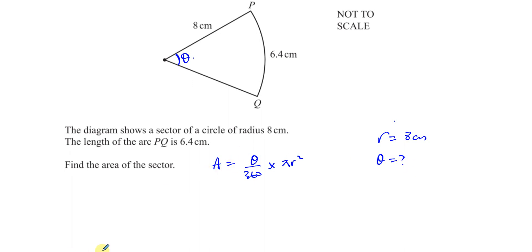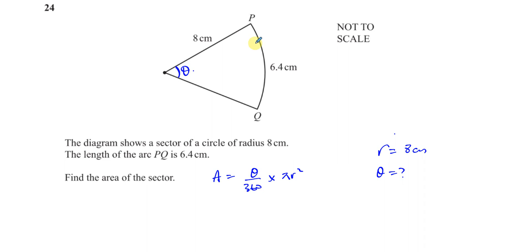Now we can find what theta is because we're given the length of the arc. We know that the length of the arc of this sector is 6.4 cm. And I know there's a formula for length of arc, which is very similar to this, in the sense that you've got theta over 360.